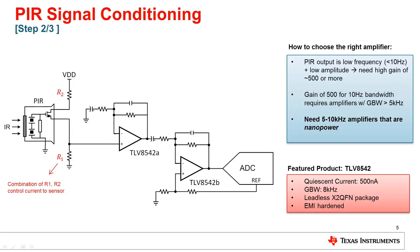In step two, we perform signal conditioning on the PIR sensor output before it is to be read by an ADC. Two amplifiers are used as successive filter and gain stages to bring up the signal amplitude to a readable level while filtering out any unwanted noise at the same time. Note R1 and R2, which control the sensor current. Typically, designers current-starve the PIR sensor in order to save power, but this comes at the cost of having a lower amplitude signal that requires more gain. In a digital integrated solution, you don't have the option to adjust the sensor current in case you needed more accurate readings, and you also wouldn't be able to fully adjust the filter cutoff frequencies and the gain to your liking, although small variations are possible. Looking at the blue box on the right, we see an example calculation showing how to choose the right amplifier for PIR signal conditioning, and we land at our first featured product, the TLV8542. It consumes only 500 nanoamps per channel and is available in a tiny leadless package, making it ideal for PIR systems.